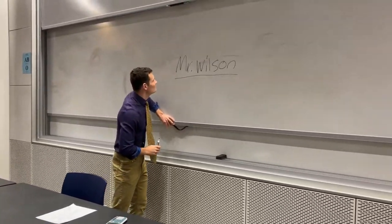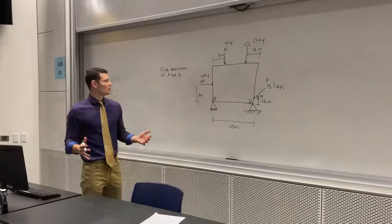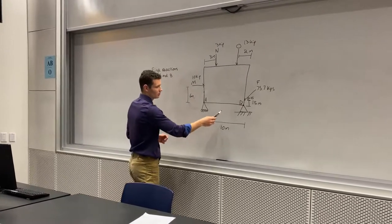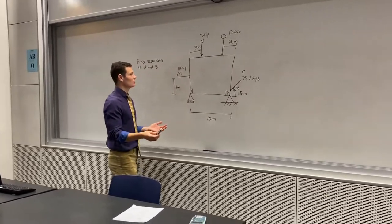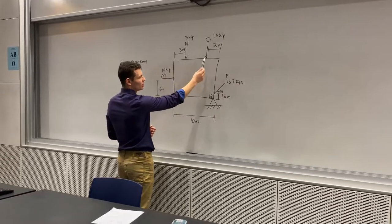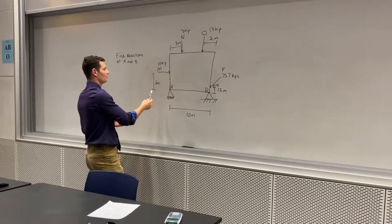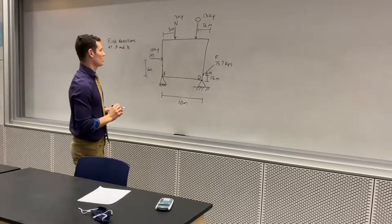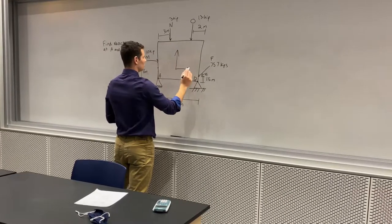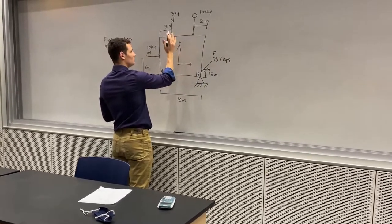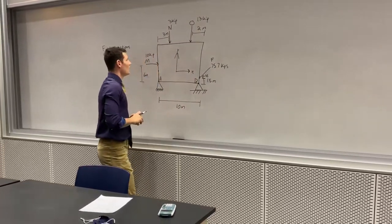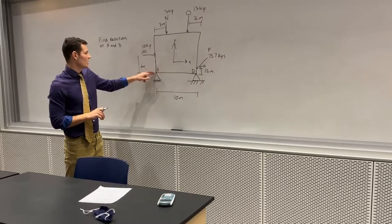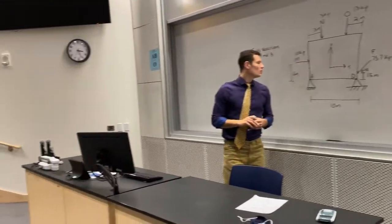Like any good professor, I've already come prepared and written a problem. We're going to start off by finding the reactions at point A and B. Point A is at a roller, point B is at a hinge. We've also got some external forces acting on our body — forces M, N, O, and F — each acting at a different position with a different amount of force. First, before drawing our free body diagram, we have to set up our convention and coordinate system: positive y is up, positive x is to the right.